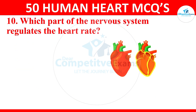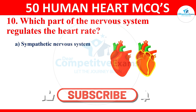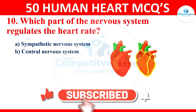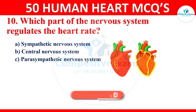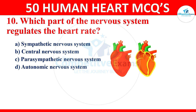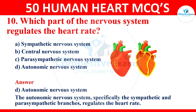Question 10: which part of the nervous system regulates the heart rate? Options are sympathetic nervous system, central nervous system, parasympathetic nervous system, or autonomic nervous system. The correct answer is the autonomic nervous system — specifically the sympathetic and parasympathetic branches — which regulates the heart rate.